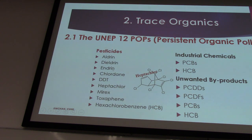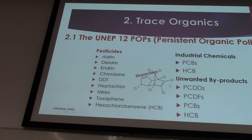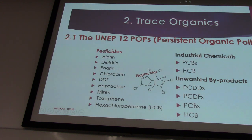These are pesticides including aldrin, dieldrin, endrin, chlordane, DDT, heptachlor, mirex, toxaphene, and also hexachlorobenzene. They are all organic chemicals, so they are called trace organics. They all fall under UNEP — the United Nations Environment Programme — known as POPs: Persistent Organic Pollutants.